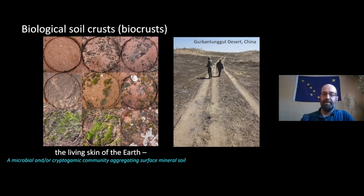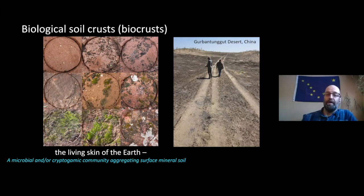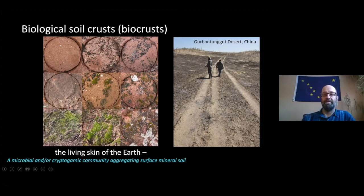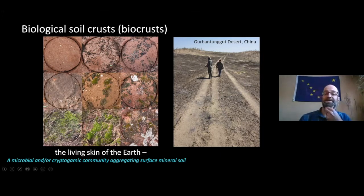This photograph on the right side happens to be a very cold and very dry place — the Gurban Tungit Desert of China. In a system like this, you can see just how important biological soil crust can be, because they are everything black that you see here. They are the dominant living color, the dominant living anything in this photograph. And this happens to be a Centrichia cannervis-dominated biological crust.